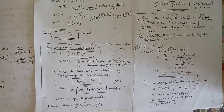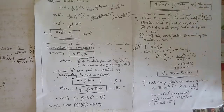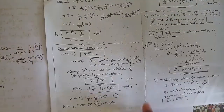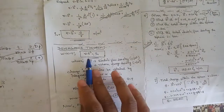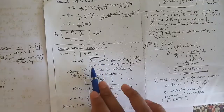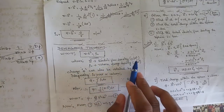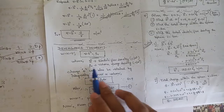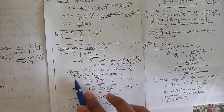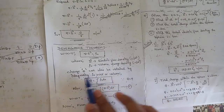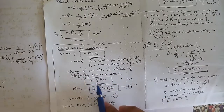So now, what is the equation for divergence theorem and how does this equation come? The equation of divergence theorem comes from the basic equation of divergence, that is del dot D is equal to rho_v, where D is the electric flux density with units coulombs per meter square, and rho_v is the volume charge density with units coulombs per meter cube. Charge Q can also be obtained by integrating rho_v over a volume.